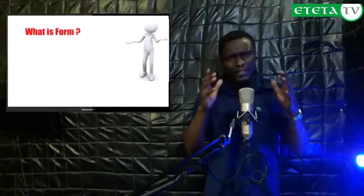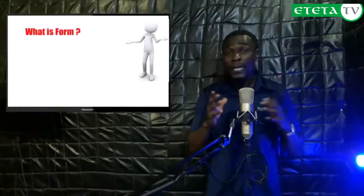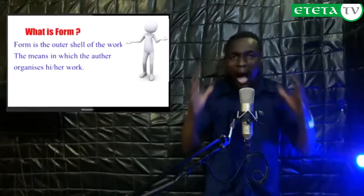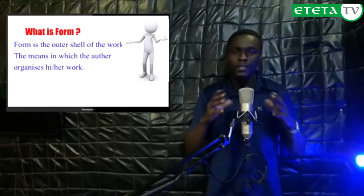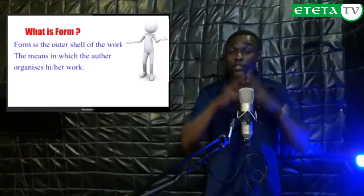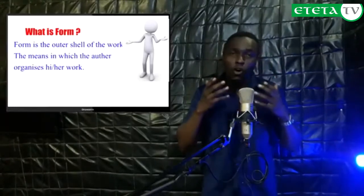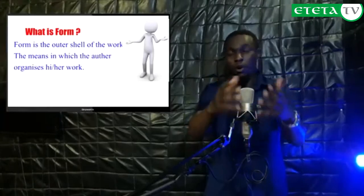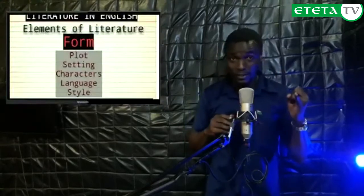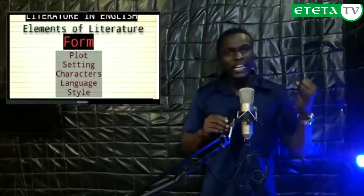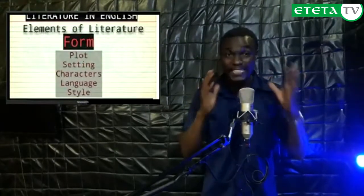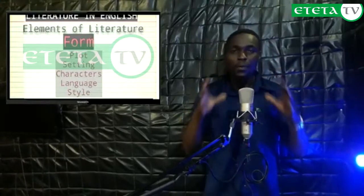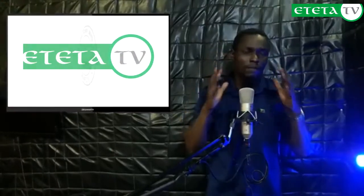Let us examine these two in depth. Form can simply be defined as the outer shell of the work of art — this is through which the artists convey their message to the audience. Form is made up of characters with characterization, style, plot, and setting. These four are the ones that make up form.